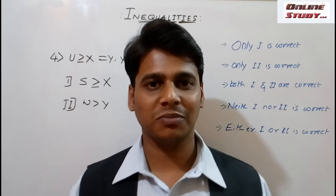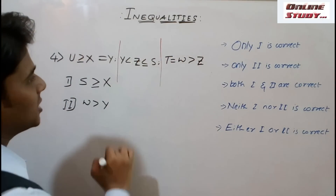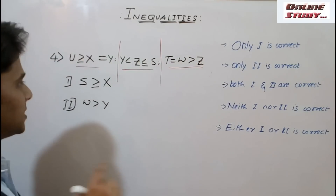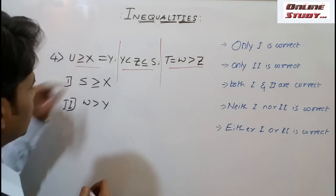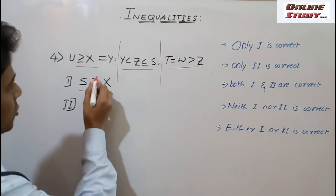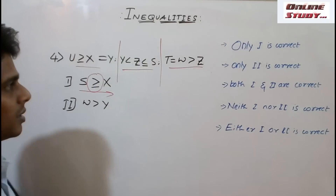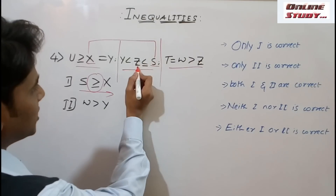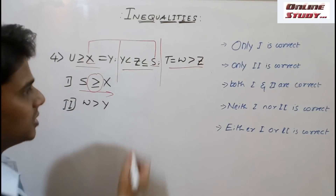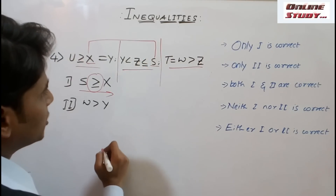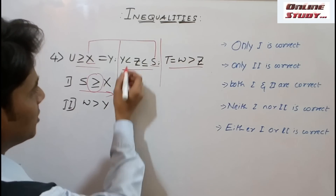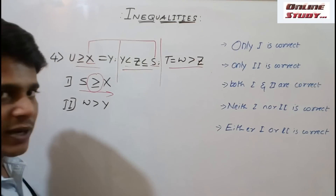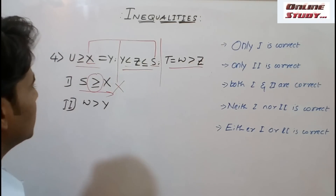Now the next question has three statements. In conclusion 1, the gate is open at S, so we travel from S to X. Note that both greater than or equal to symbols are given in the conclusion. S is here and X is here. From S to Z, yes it is possible — the gate is open and both symbols are present. But from Z to Y, it is not possible because the equal to symbol is missing in the statement. So conclusion 1 fails — we cannot reach X.